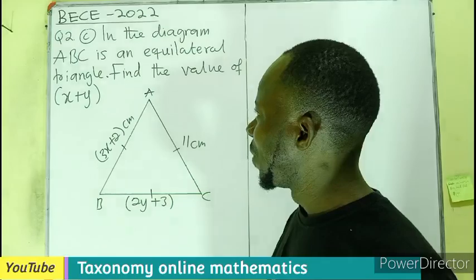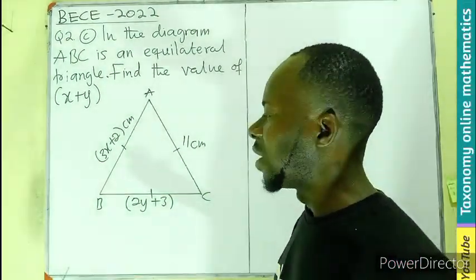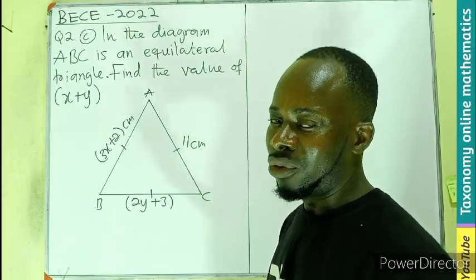So in the diagram we have ABC is an equilateral triangle. We have to find the value of X plus Y.